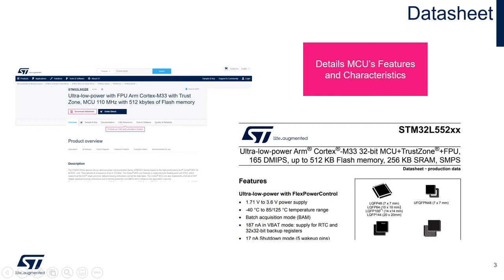The datasheet gives a general overview of the microcontroller. In the datasheet, you will find a brief overview of the micro, its features, pin mappings, electrical characteristics, and ordering information. To find the corresponding microcontroller's datasheet, start by typing in the full microcontroller part number in the search bar on st.com. Once redirected to the MCU's landing page, you can access the datasheet by clicking on the Download Datasheet icon.